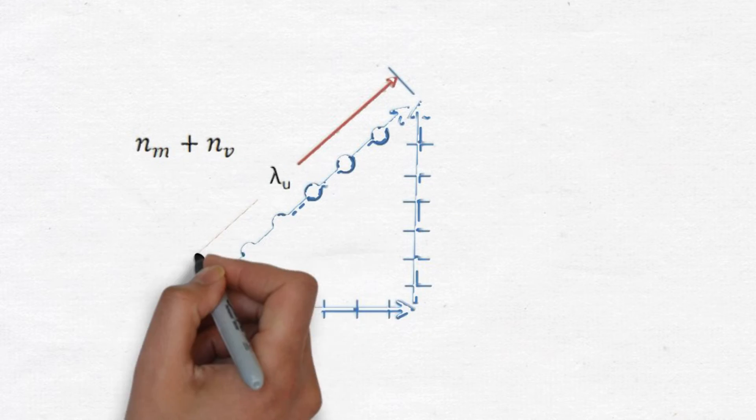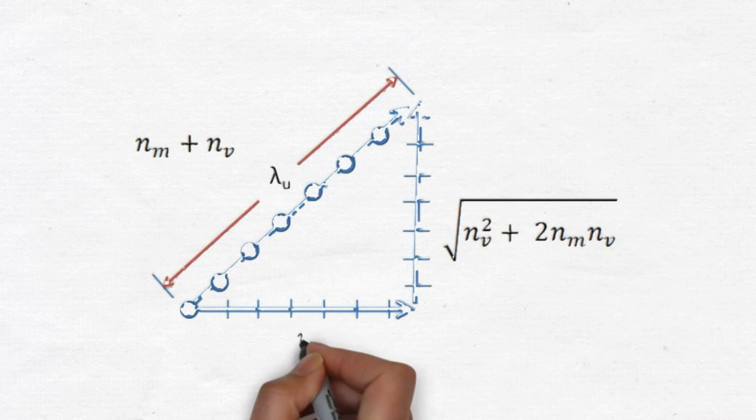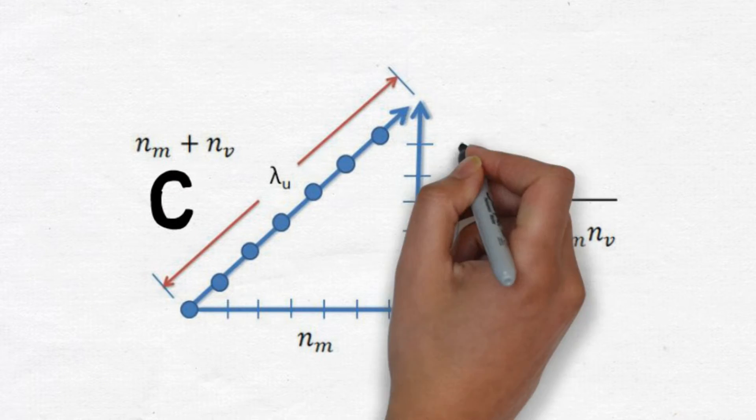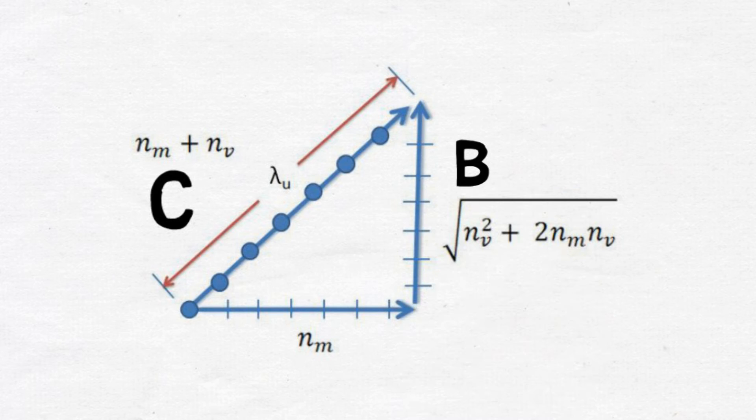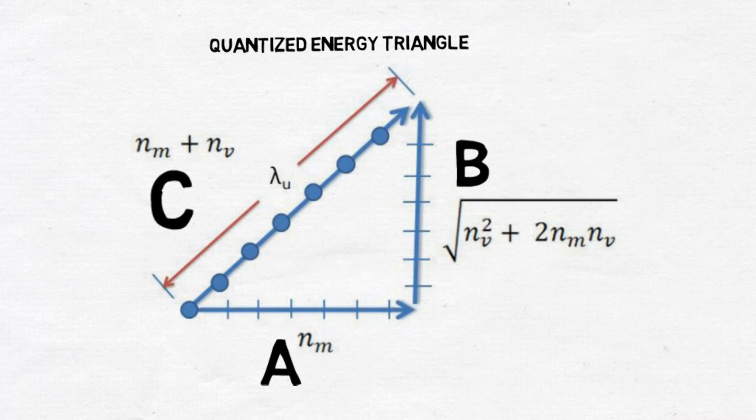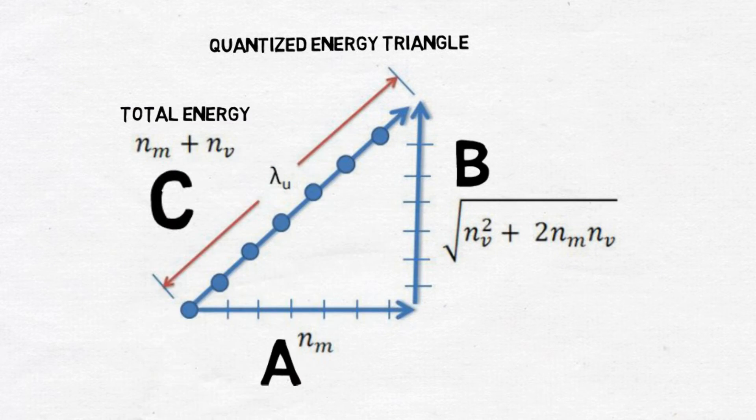In mapping the energy integers to Einstein's right triangle relationship, we can see that the rest mass term, nm, equals leg a, and the total energy count, leg c, or the hypotenuse of the triangle, is simply the sum of the energy units nm plus nv. Using Pythagorean's theorem, we can then calculate leg b, or the momentum portion of the energy triangle, to be the square root of nv squared plus 2 times nv times nm.